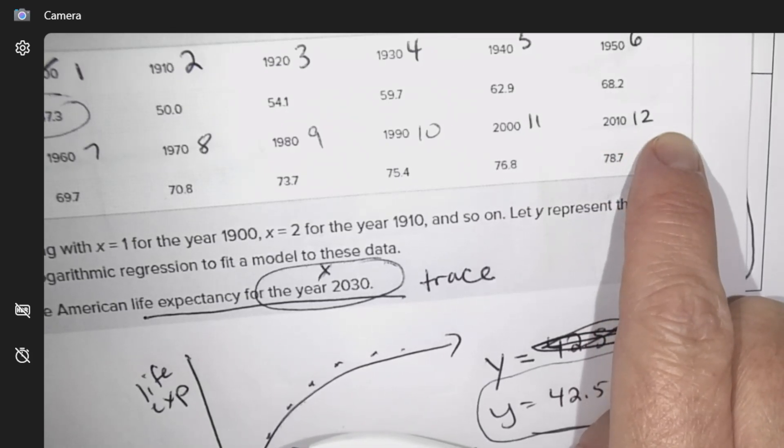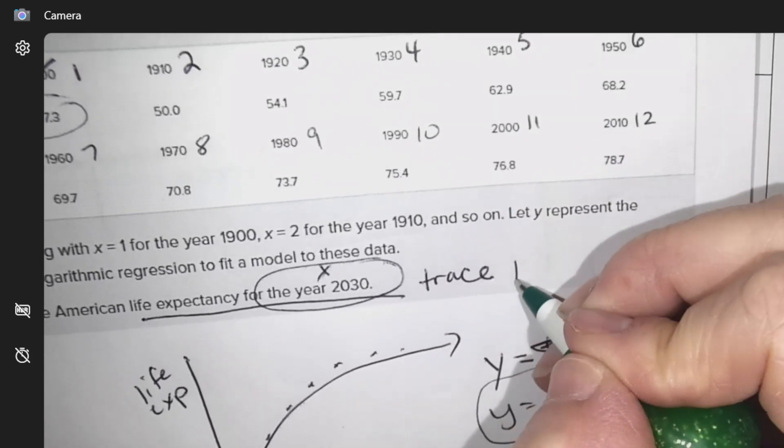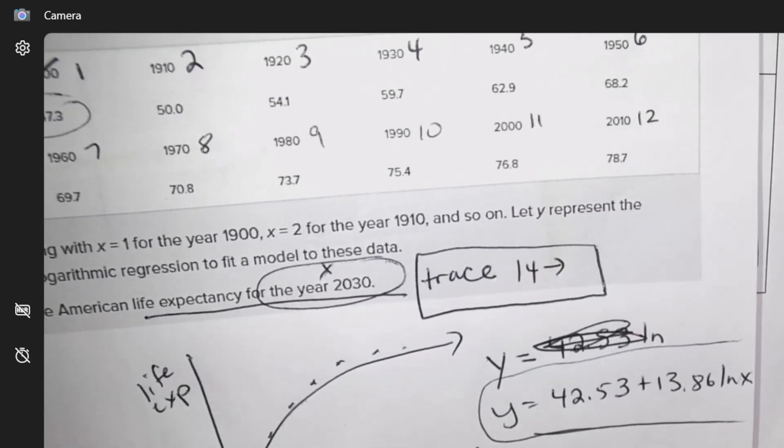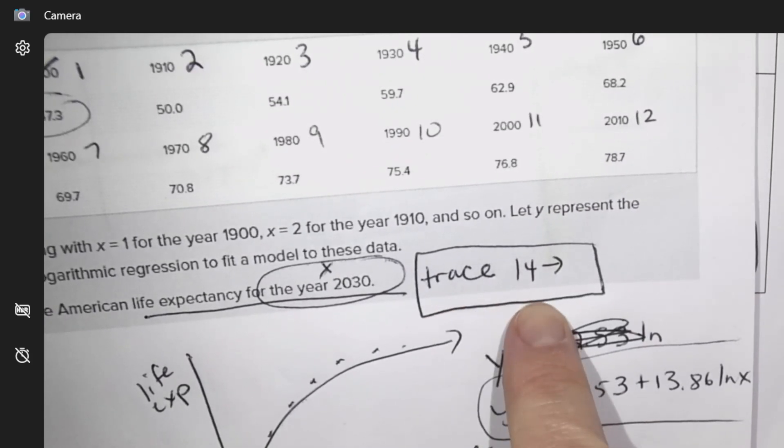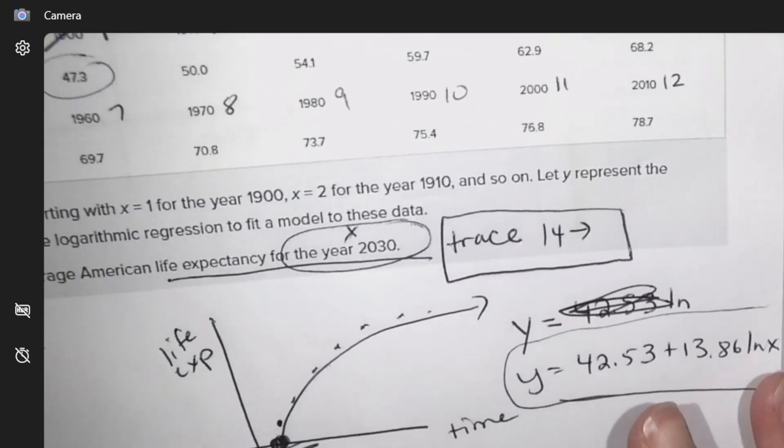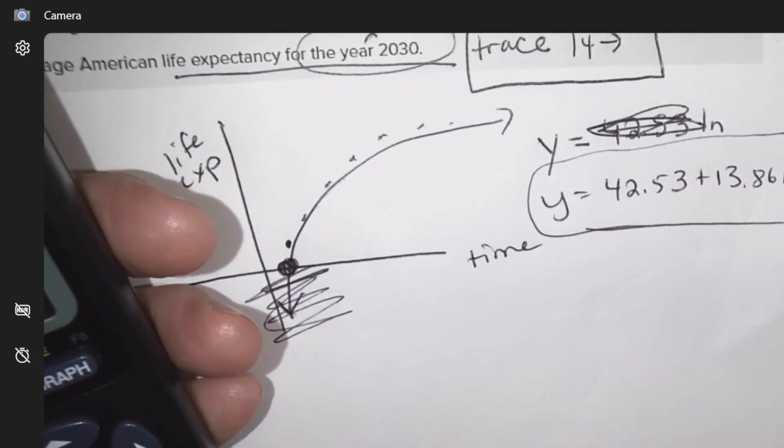So, 13 would be 2020. So, 14. So, this is when I say show your work or something, I need you to be doing this, so I can see, well, what are you doing? Trace 14 is what I'm doing. That's it for showing your work. That's all I need.